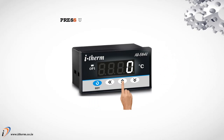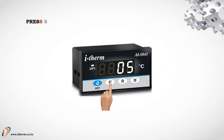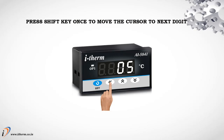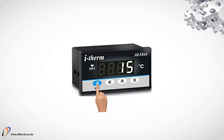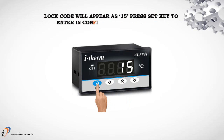Press the Up key to make the unit digit 5. Press the Shift key once to move the cursor to the next digit. Press the Up key to make the unit digit 1. The lock code will appear as 15. Press the Set key to enter in configurational parameters.